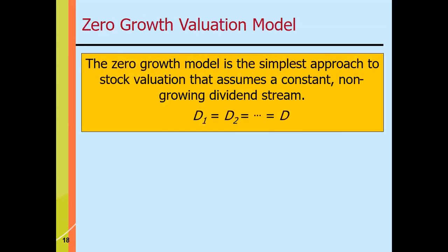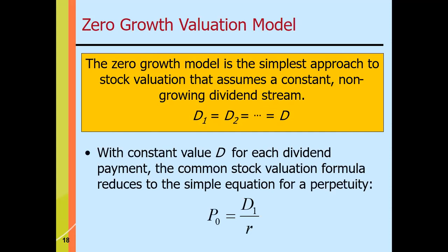Next is the zero growth valuation model — the simplest approach, which assumes a constant non-growing dividend stream. Same or constant amount of dividends throughout all years. The formula is the same as for preferred stock or preference share: P sub zero equals the dividend in the next year divided by the rate. This is essentially the present value of a cash flow in perpetuity.